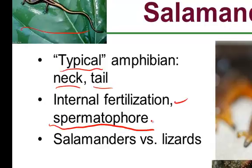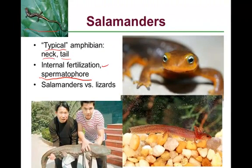The giant Chinese salamander is the largest salamander in the world; there's also a Japanese giant salamander, both very rare. The axolotl is notable because it never fully metamorphoses — it never loses its external gills and becomes an air-breather, retaining those gills throughout its life.